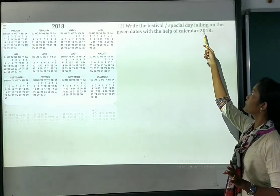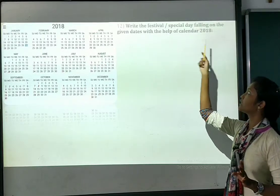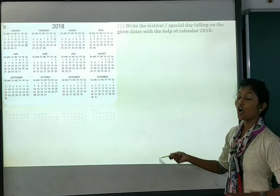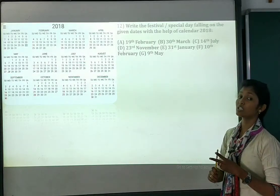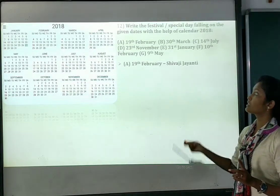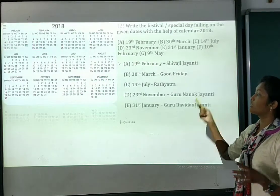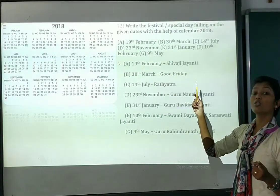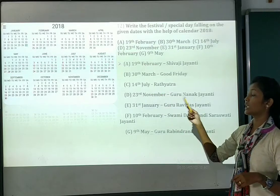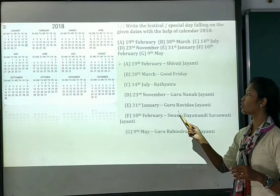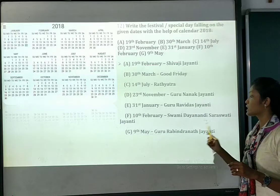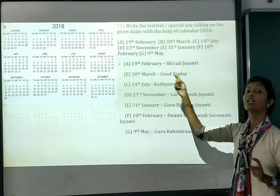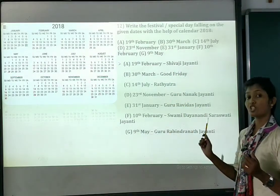Number 12: find special dates and festivals falling on the given dates with the help of the 2018 calendar. Here we have to see the 2018 calendar. On 19th February, Shivratri/Janmashtami falls; 30th March is a special date; 14th July is another date; 23rd November is Guru Nanak Jayanti; 31st January is Guru Ravidas Jayanti; 10th February is Swami Dayanand and Saraswati Jayanti. These are the special dates and festivals falling on the given dates.